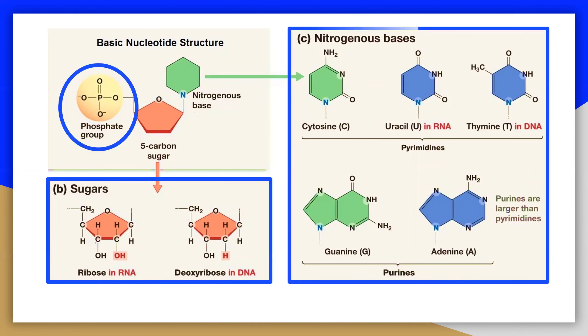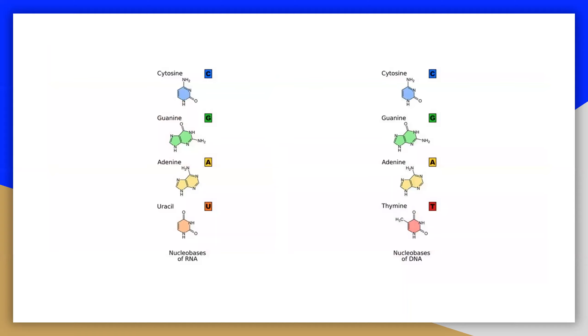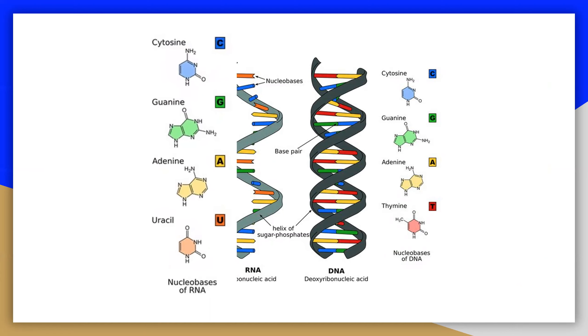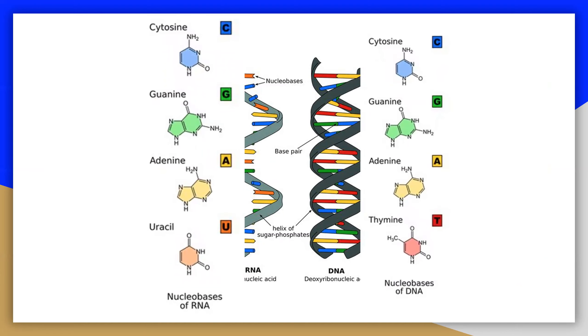Finally, there are nitrogenous bases. These individual monomeric groups, the sugar and phosphate molecules, are joined to form a backbone of nucleotide. Each nucleotide then joins with one of four possible nitrogenous bases.